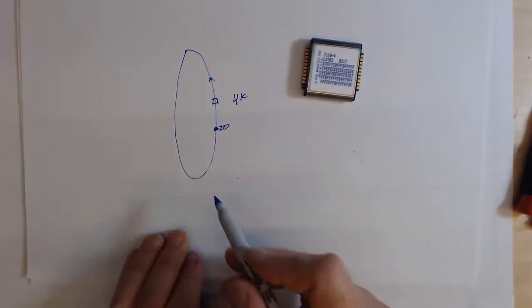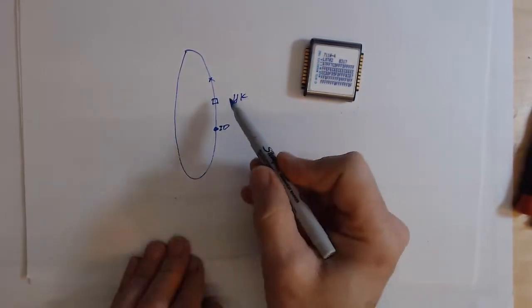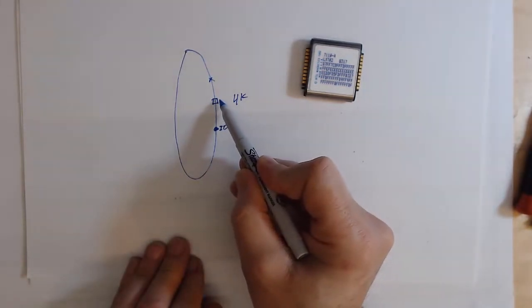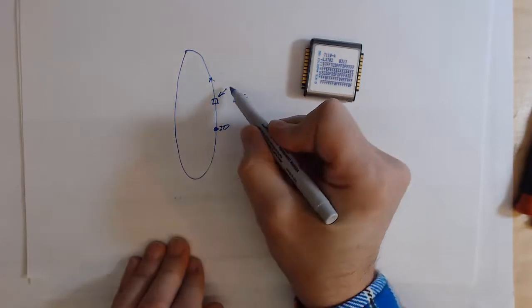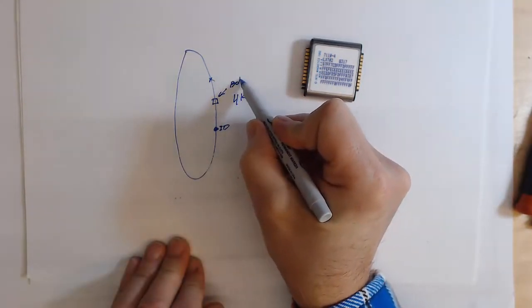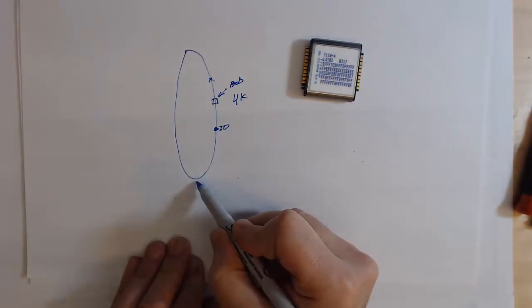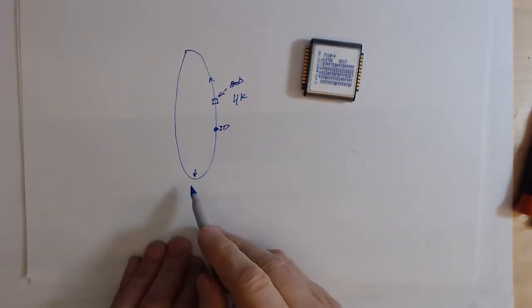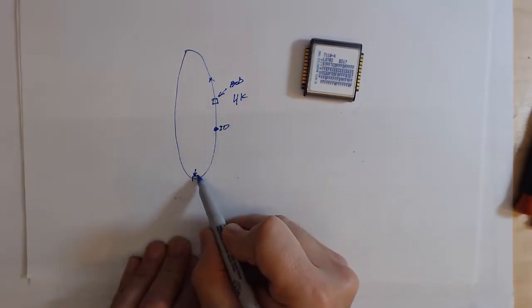Now on one end of this racetrack we're going to feed this. If we want to write data to this racetrack, first thing we have to do is move the bubble of interest. Let's say we're interested in this little bubble right here, let's call him Bob. We have to move Bob all the way around until he gets right here to this end of the racetrack. This is where we're going to feed a new bubble.